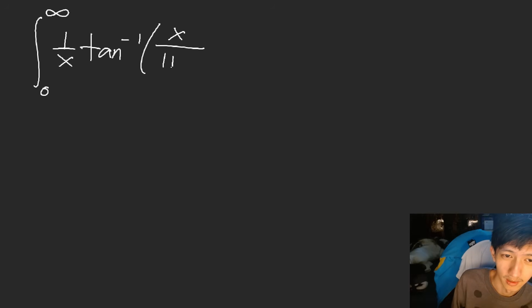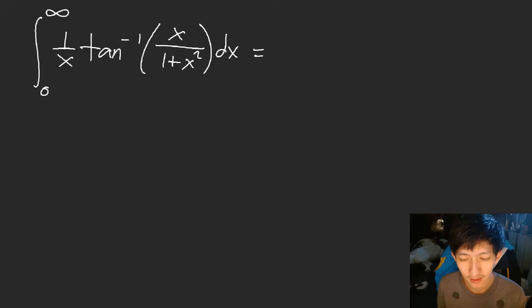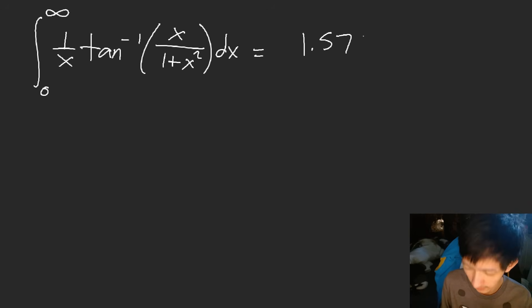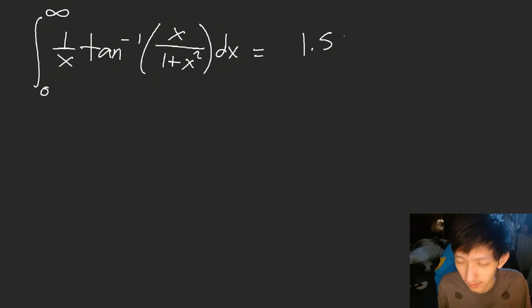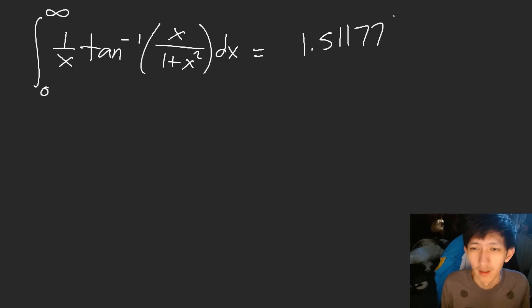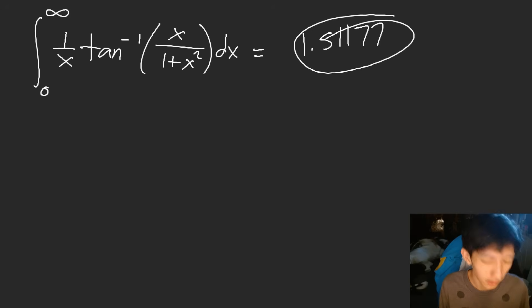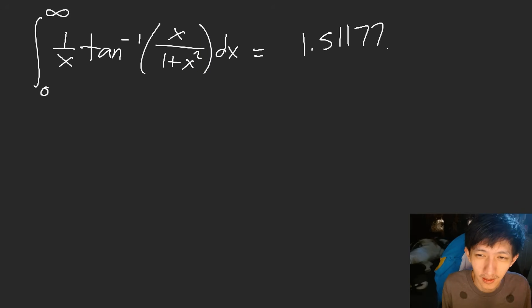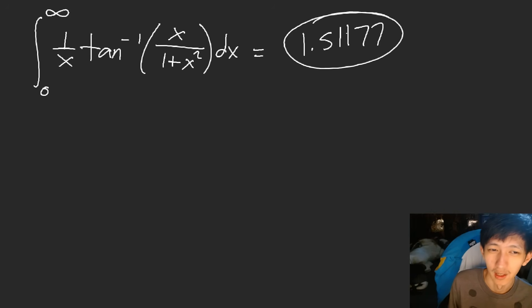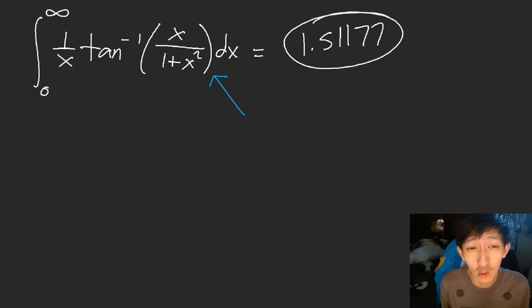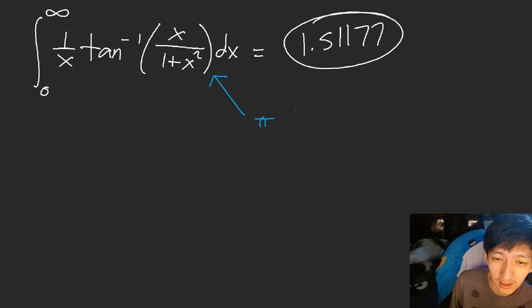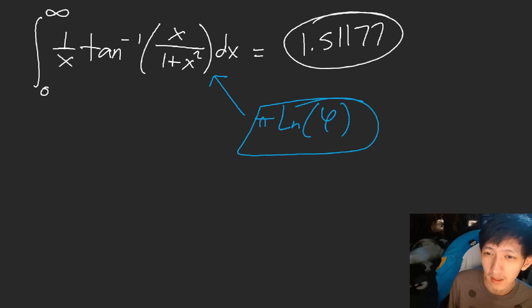Let's say the integral of x over 1 plus x squared dx. You answer to me, oh, this doesn't have a closed form, but it approximately equals 1.51177. If you give me this, you're obviously using Wolfram Alpha. If you were a real speed integrator, you should easily solve this — I even showed you the solution in my integration bee training for advanced. You could immediately solve this as pi times ln of b. If you were a real speed integrator, you would have given me this.